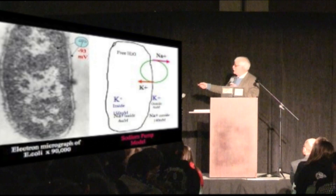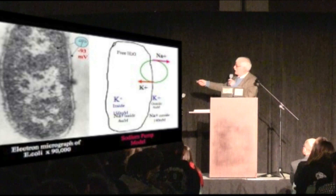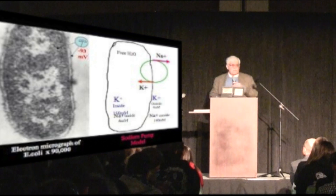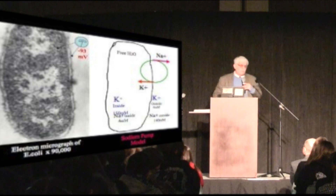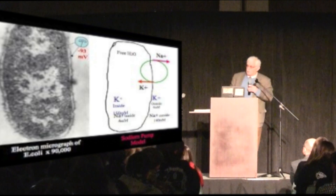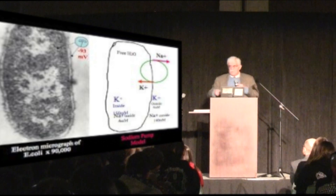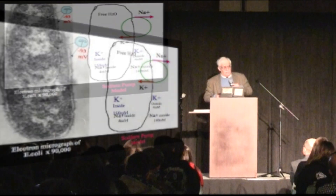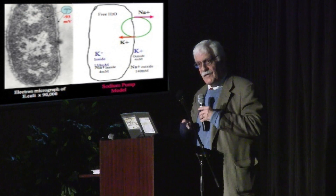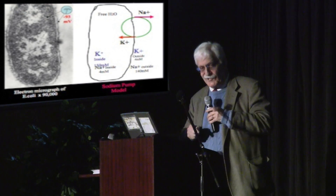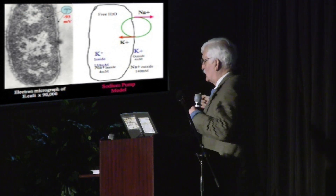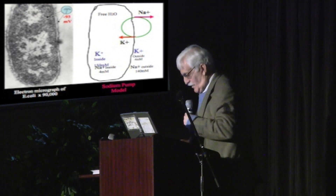Potassium has a plus charge — it can stick to stuff on the inside of the cell that has a negative charge, and that's how it builds up. But I still had that one question: why is potassium going to stick and not sodium?